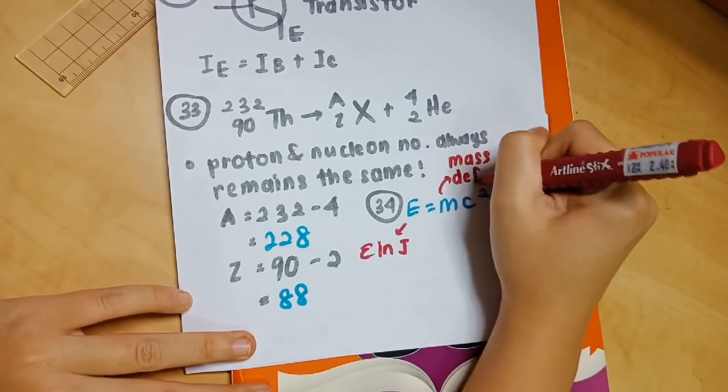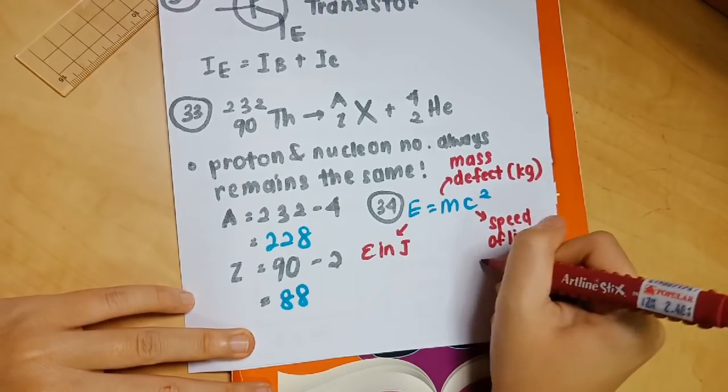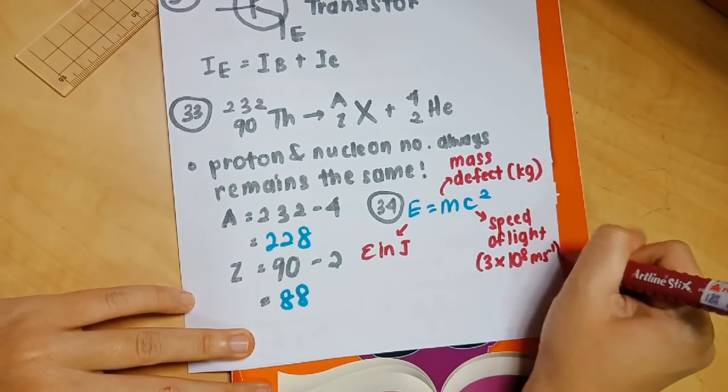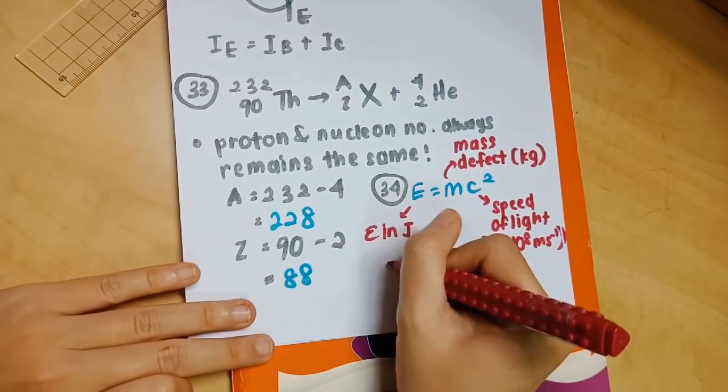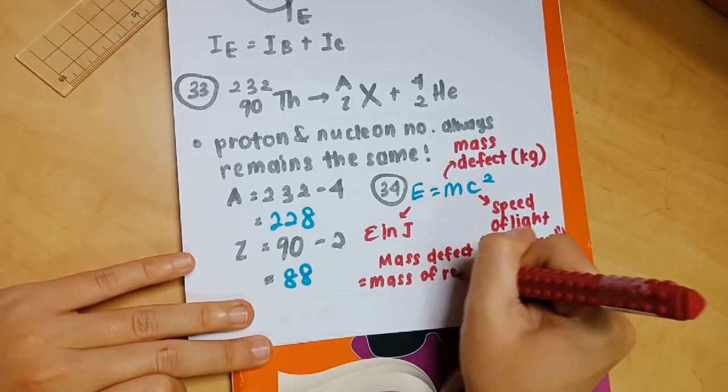C is the speed of light, which is always 3 times 10 to the power of 8 ms to the negative 1. The way to find mass defect is you have to take the mass of reactants minus the mass of products.